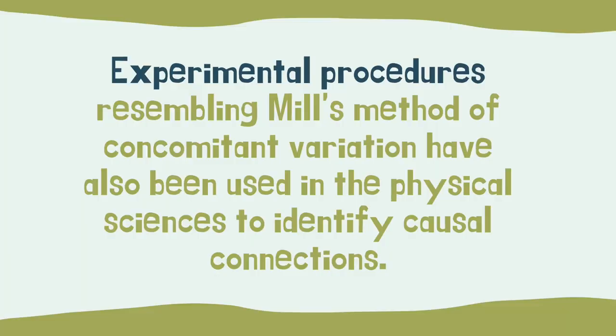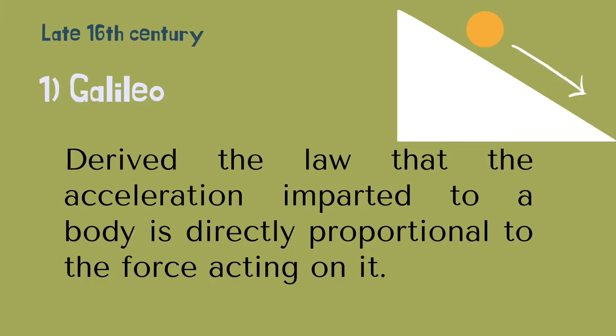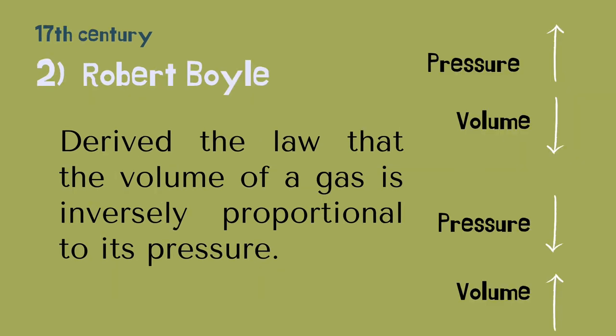Experimental procedures resembling Mill's method of concomitant variation have also been used in the physical sciences to identify causal connections. In the late 16th century, Galileo derived the law that the acceleration imparted to a body is directly proportional to the force acting on it, using experiments with spheres rolling down inclined planes. In the 17th century, Robert Boyle derived the law that the volume of a gas is inversely proportional to its pressure. Boyle constructed an apparatus to compute the volume of a gas as he varied pressure, noting that as pressure increased, volume decreased, and as pressure decreased, volume increased.